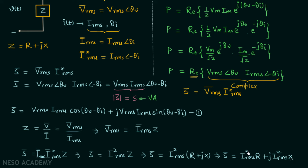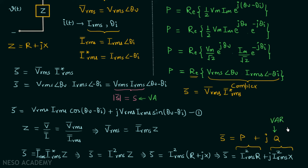It is clear that I_RMS² × R is the real part of the complex power, which we call average or real power. And I_RMS² × X is the imaginary part, which we call reactive power. So the complex power S = P + jQ, where P is average real power depending on the load resistance, and Q is reactive power depending on the load reactance. Reactive power measures the energy exchange between the source and the reactive part of the load, and is measured in VAR (volt-ampere reactive) to distinguish it from real power measured in watts.